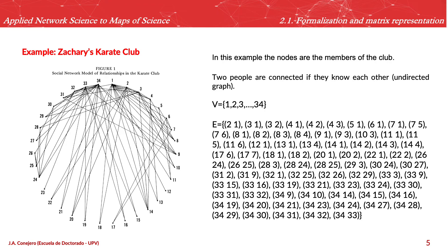In the example of the Karate Club, following this formulation, we have 34 nodes representing the master, the administration, and the members of the club, numbered 1 to 34. We then have a set of edges — (2,1), (3,1), (3,2), and so on — representing the connections shown in the graph.